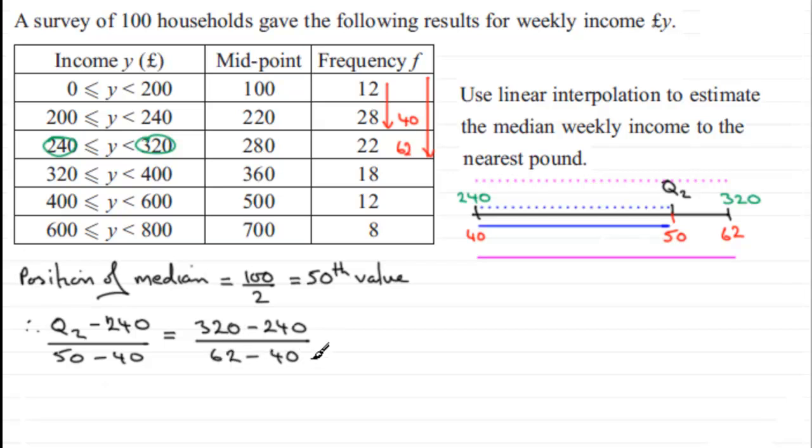So it's just a question of rearranging this equation now. To get Q2, all I'm going to do is multiply both sides by what is effectively 10 here, 50 take away 40, and then add the 240. So what we've got here is 80 on the top there divided by 62 take 40, which is 22. I'm going to multiply both sides by 10, so that's going to leave me with Q2 minus 240, and then add 240 to both sides and that gives me Q2.